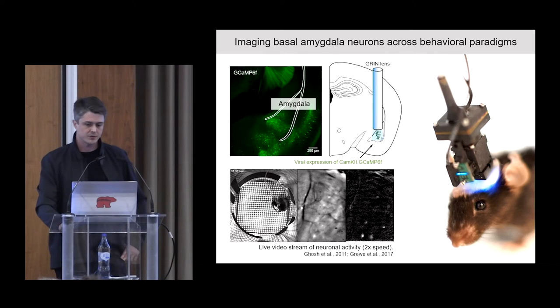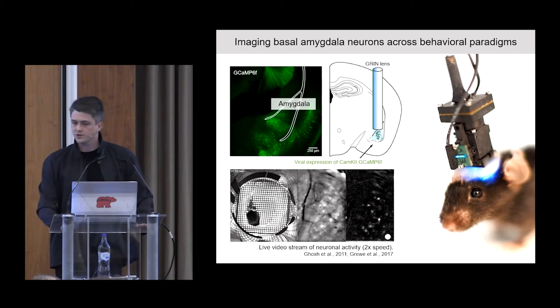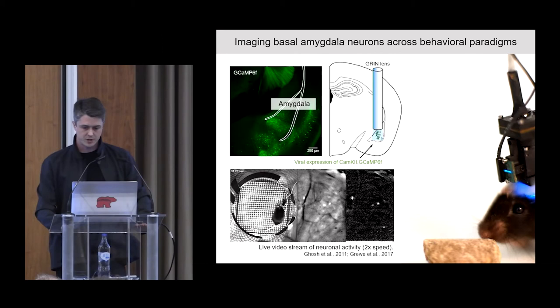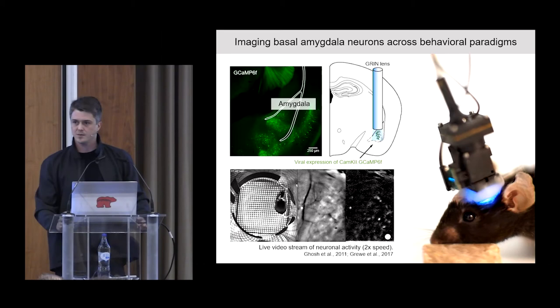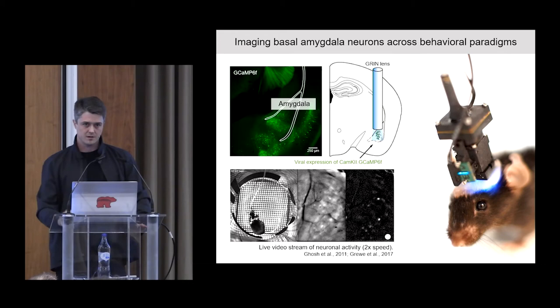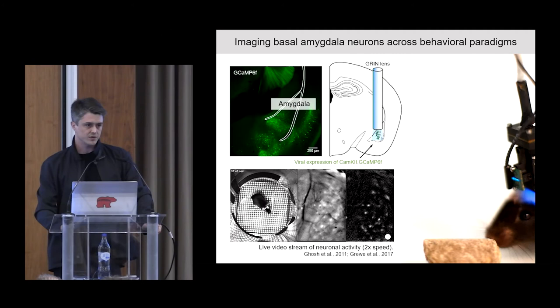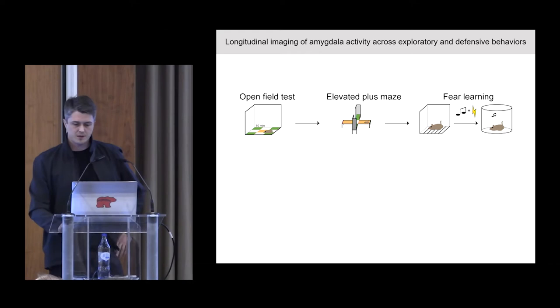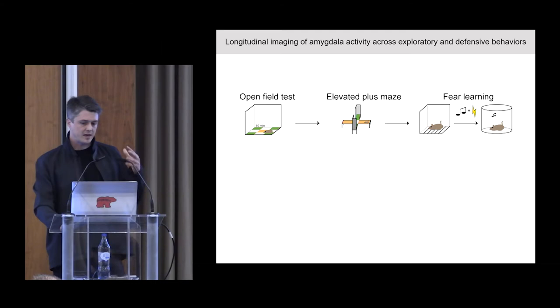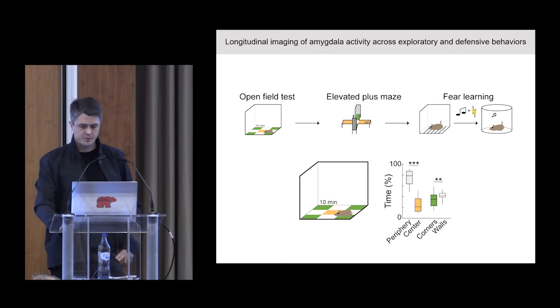To answer these questions, we used the miniaturized microscope imaging approach in the basal amygdala to follow large populations of neurons across days and different paradigms. We expressed a CamKII-driven GCaMP in basal amygdala neurons, then implanted a gradient index lens above the amygdala, which acts as an optical relay towards the head-mounted miniaturized microscope. This allowed us to livestream neural activity of up to 150 neurons in freely moving mice across different consecutive days and paradigms. We performed longitudinal imaging across exploratory and defensive behaviors, combining an open field test with an elevated plus maze test and a five-day classical fear conditioning and extinction paradigm.